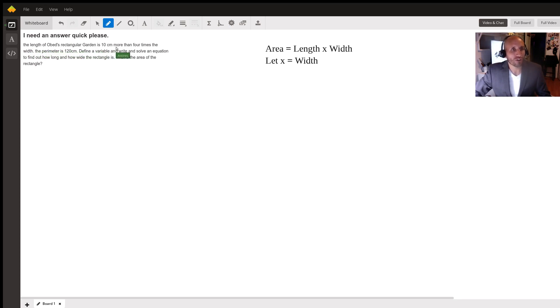So let's read the question here and understand what the question is. The length of Obert's rectangular garden is 10 centimeters more than four times the width. The perimeter is 120 centimeters. Define a variable and write and solve an equation to find out how long and how wide the rectangle is. What is the area of the rectangle?